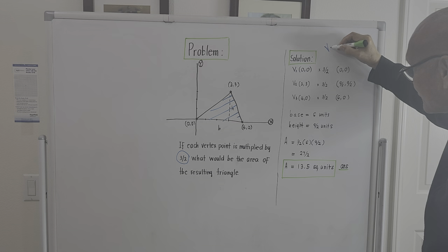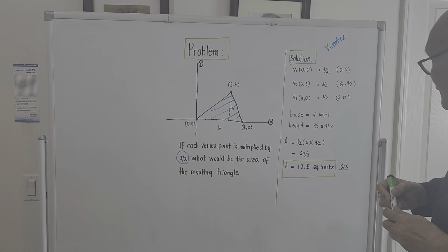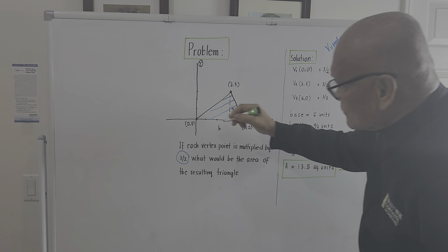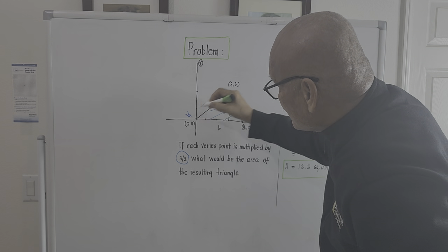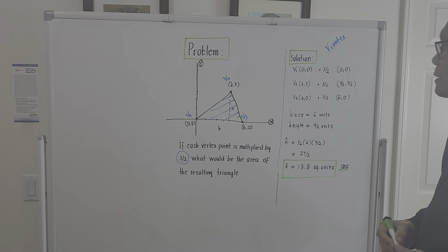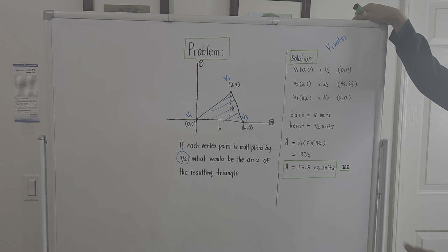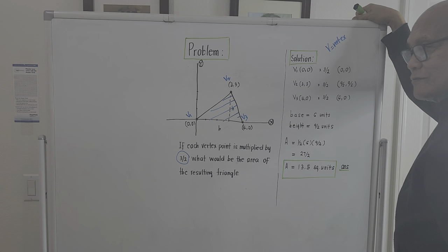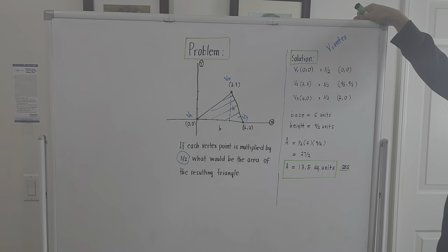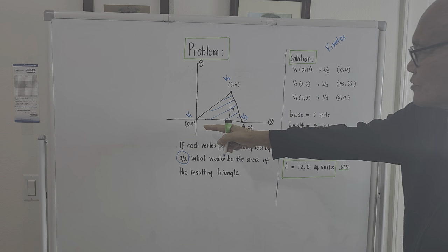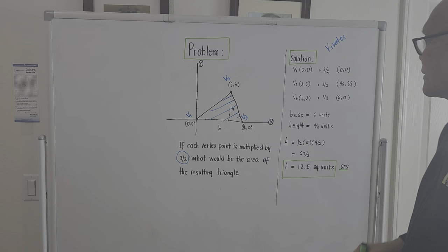For the solution, let's label the vertices. Capital letter B with subscripts one, two, and three — so B₁ is vertex one, B₂ is vertex two, and B₃ is vertex three. Vertex number one is at the location (0, 0).